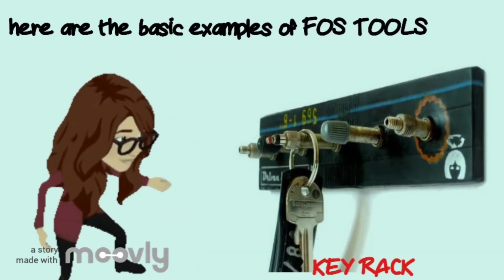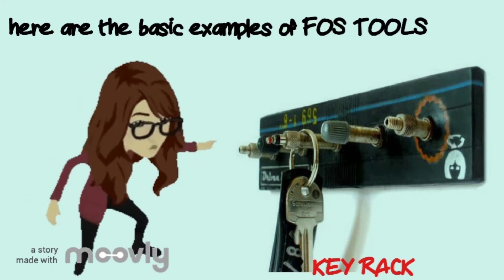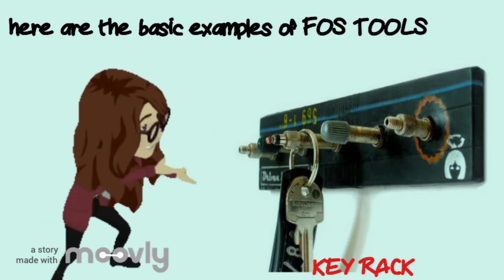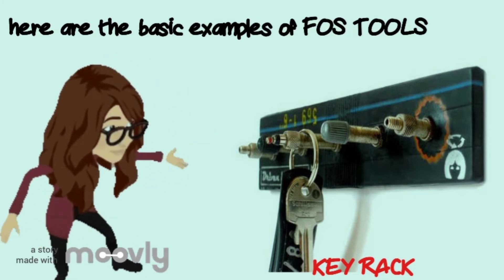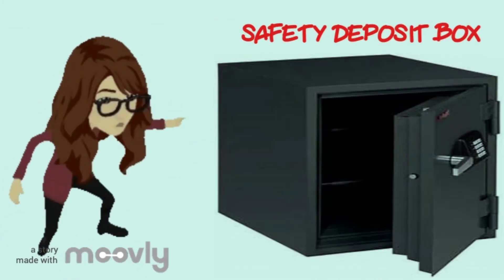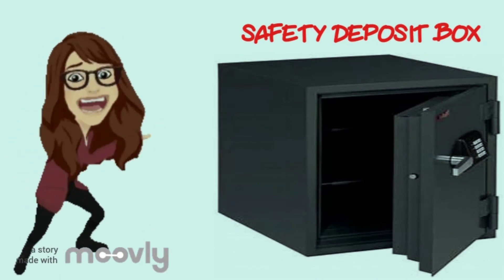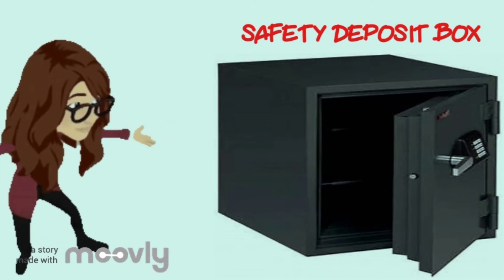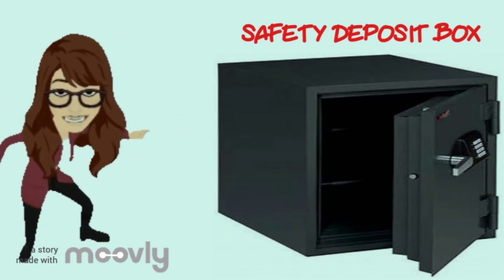We have a key rack. It is an array of numbered compartments used to store guest room kits. Safety deposit box — it is a small box in which you can store valuable objects.